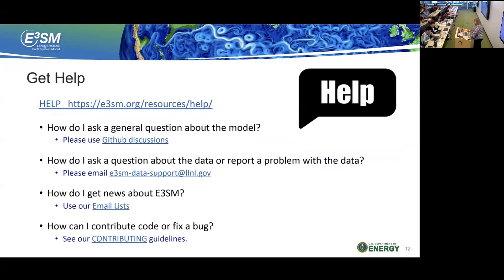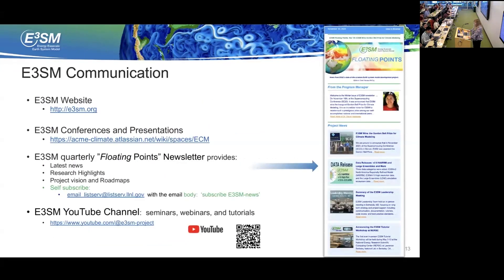For how to get help: e3sm.org has a help section. For questions about the model, go to GitHub Discussions and post an issue there. For questions about data or if you find a problem, email the E3SM data support. There are some news email lists — please check those out. If you want to contribute to the code or have a backfix, please check the contributing guidelines. The main website is e3sm.org. We also have a Confluence space for conferences and presentations, and sometimes videos.